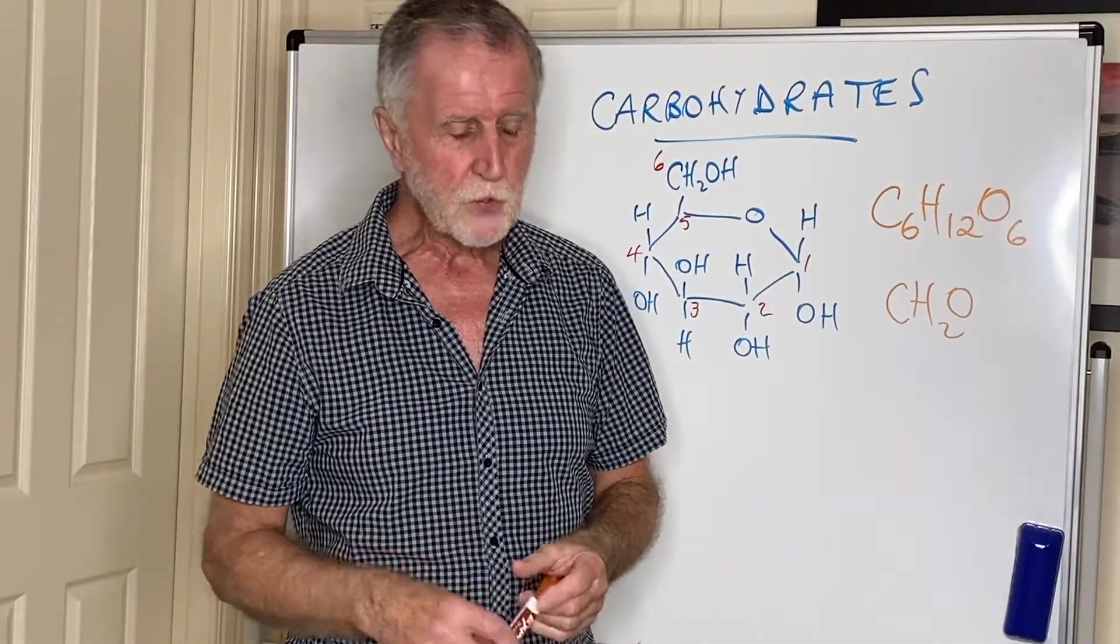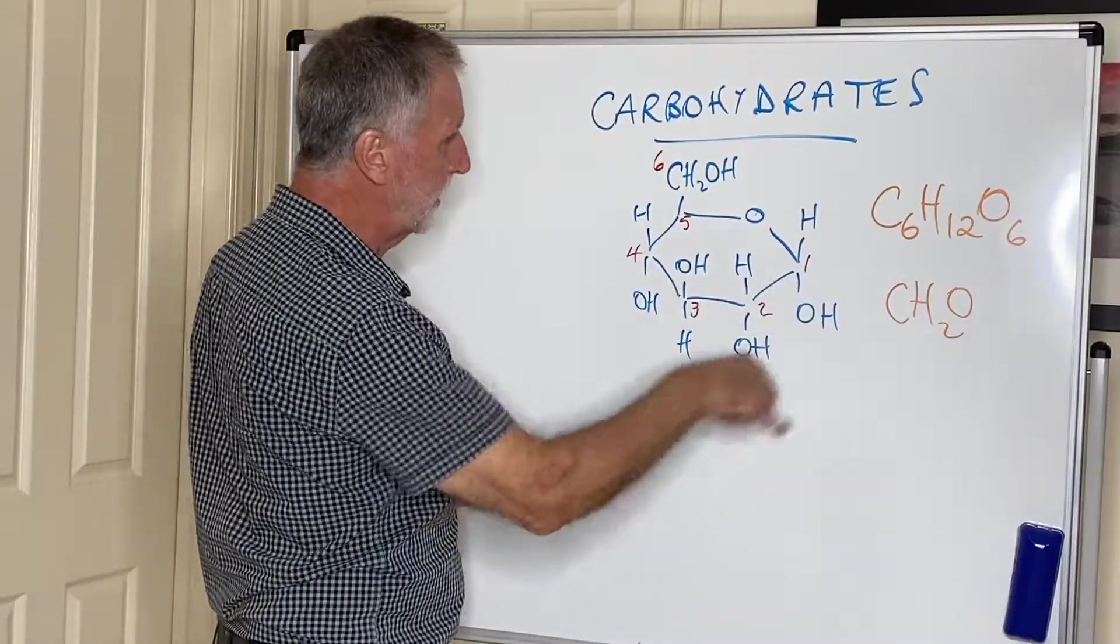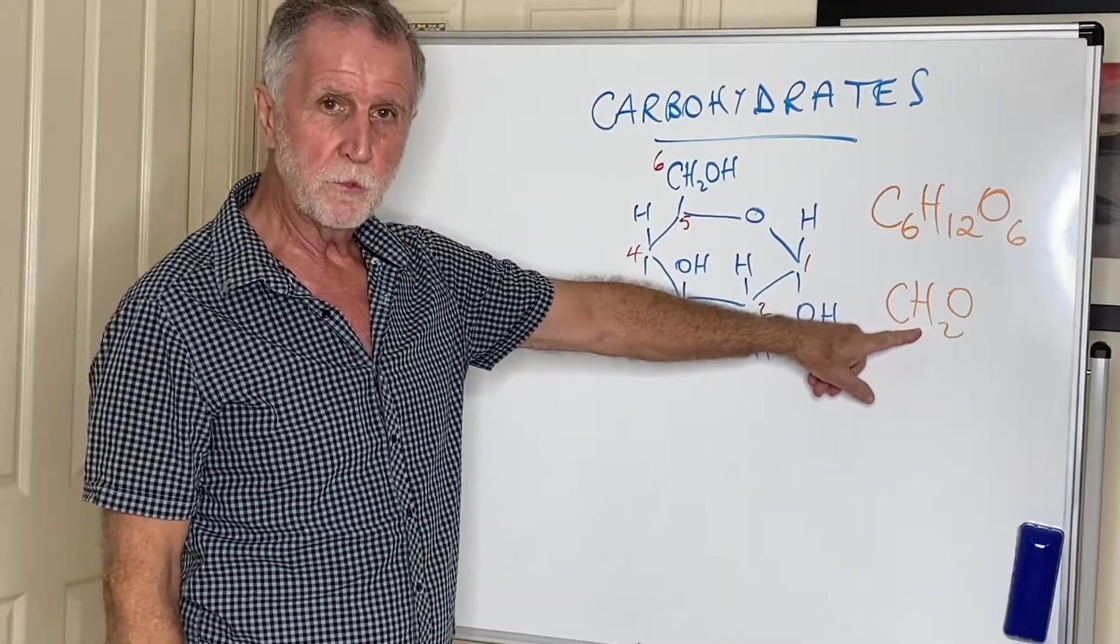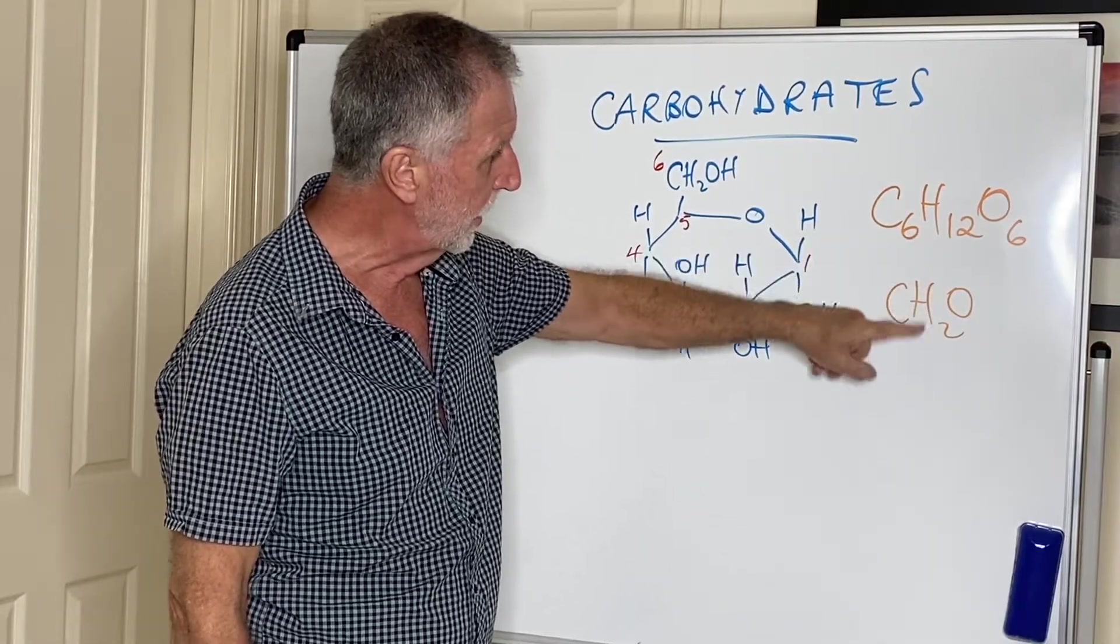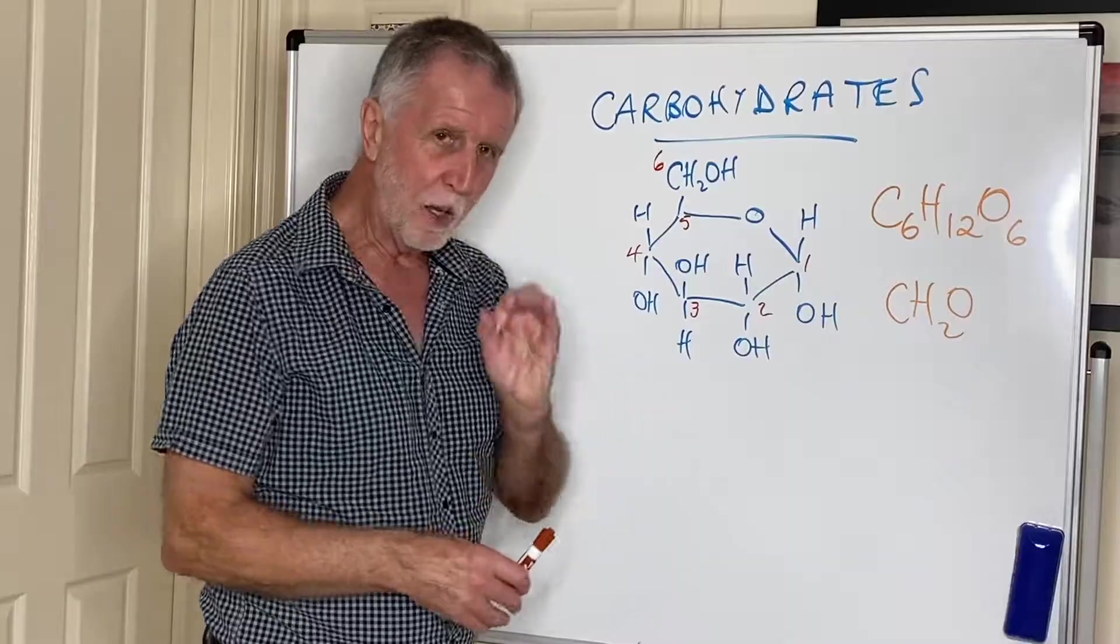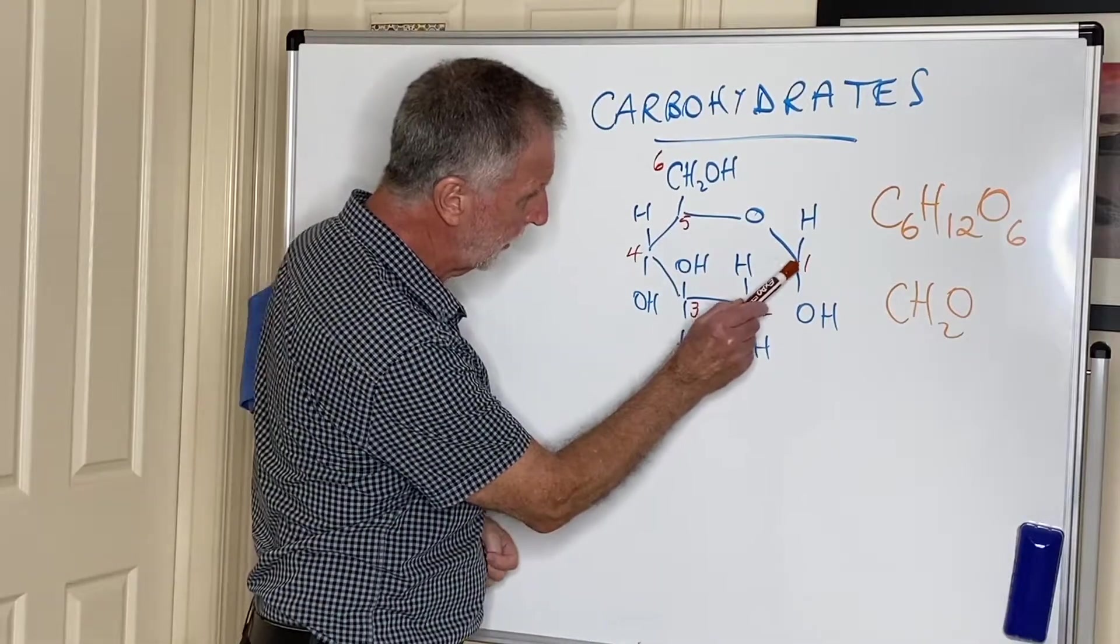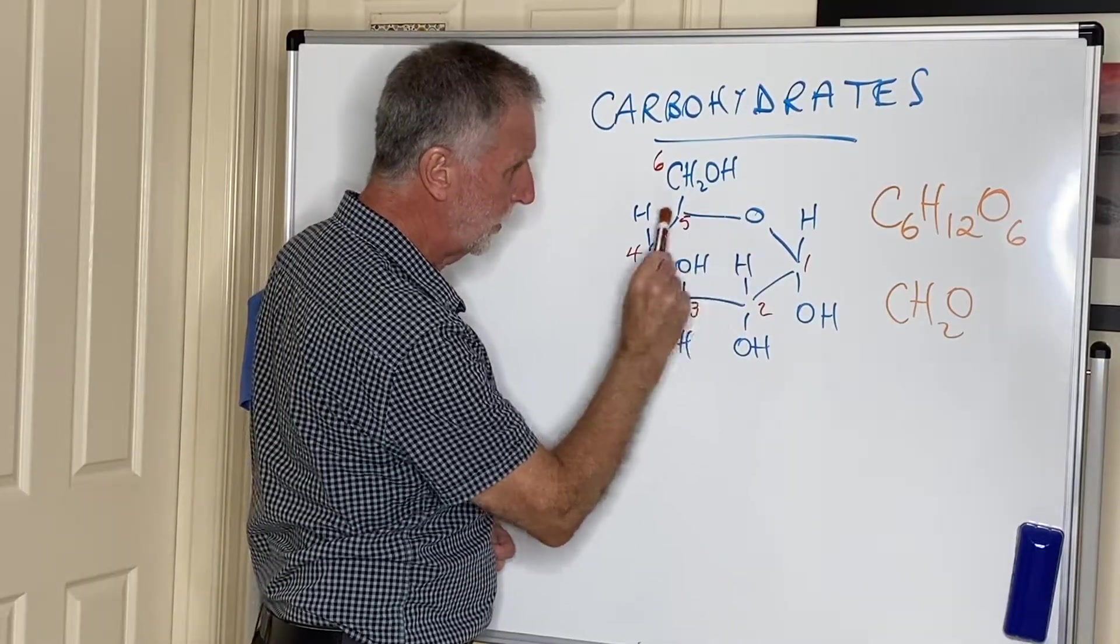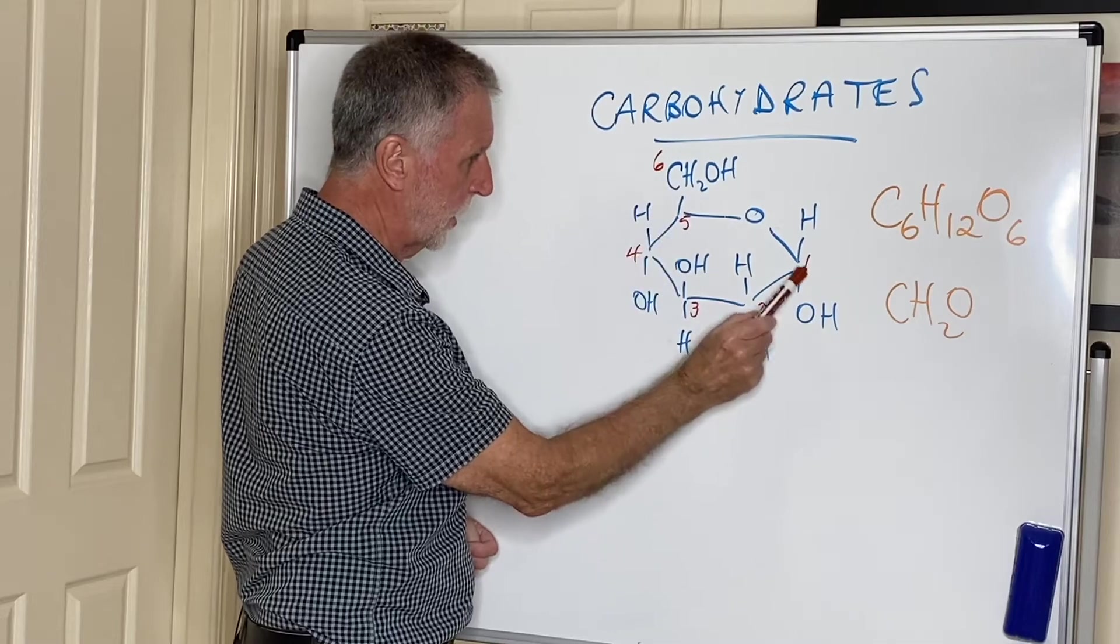But more importantly, you need to know about some polysaccharides. Now this at the moment is a molecule called alpha glucose. All monosaccharides have an empirical formula CH2O, and they all have a molecular formula of C6H12O6, which of course is six times that empirical formula unit. Now glucose as given to you in the data book is in its alpha form. And in order to distinguish it from the other form beta, we have to look at carbon number one. Now I've numbered them in red as you can see. So if you find the oxygen in that ring, then go clockwise until you get to number six. So carbon one, two, three, four, five, six.